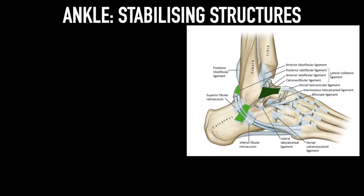The anterior talofibular ligament is essentially a capsular thickening which goes from the anterior part of the fibula and attaches to the anterior part of the neck of the talus. The calcaneofibular ligament arises from the posterior distal tip of the fibula, goes underneath the peroneal tendons, and is attached to the tubercle of the calcaneum. The posterior talofibular ligament is the strongest of these three; it is only rarely injured, and it arises from the posterior aspect of the fibula and attaches to the posterior lateral tubercle of the talus.